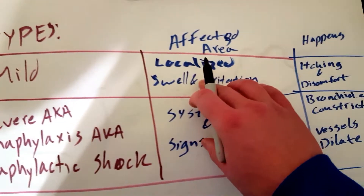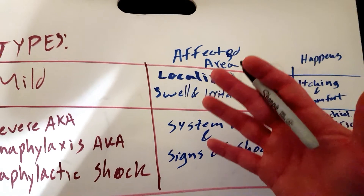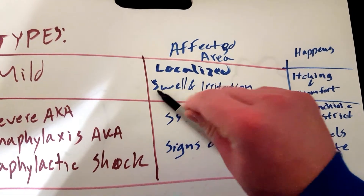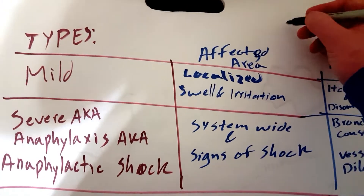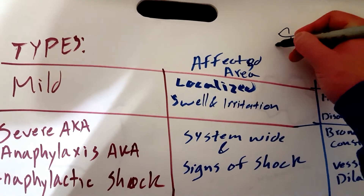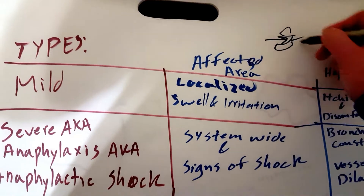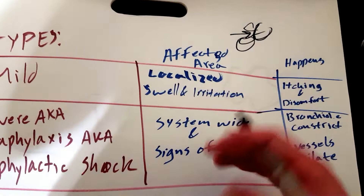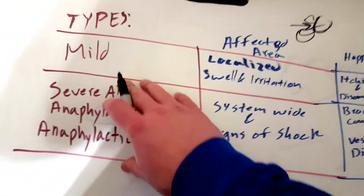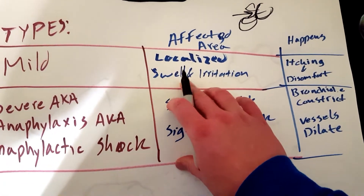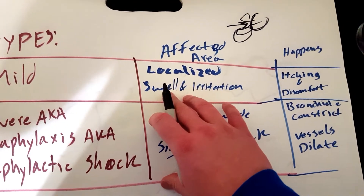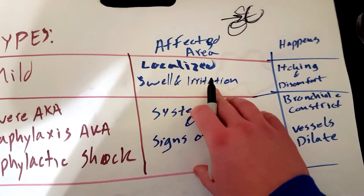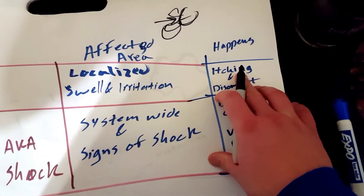A mild allergic reaction is going to be localized — wherever that allergen came in contact with your body, whether it's the surface of your skin or when eating something. If you were eating something, maybe your mouth might swell up, your lips might swell up. If you got stung by a bee, it might just be localized. You'll have swelling, irritation, itchiness, and discomfort wherever it came into contact.